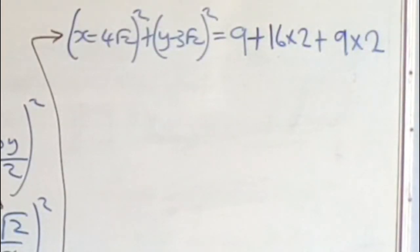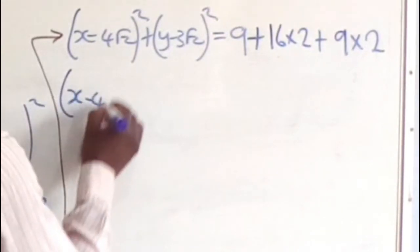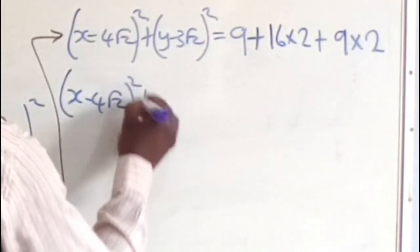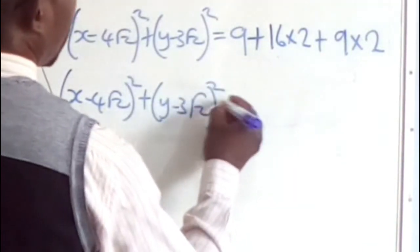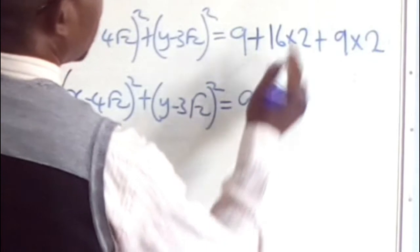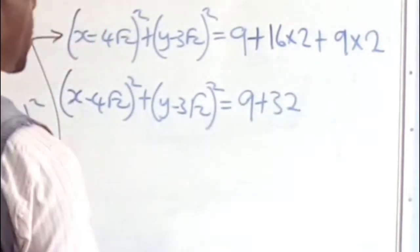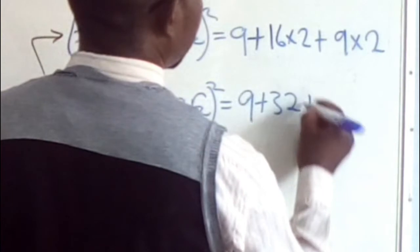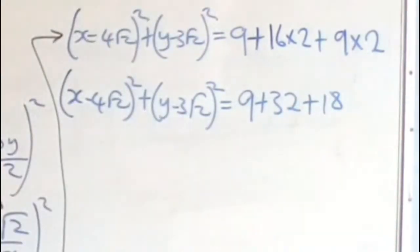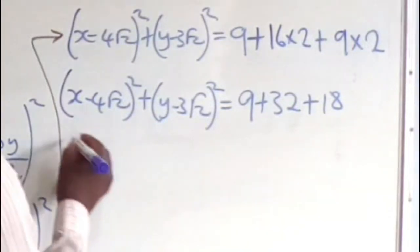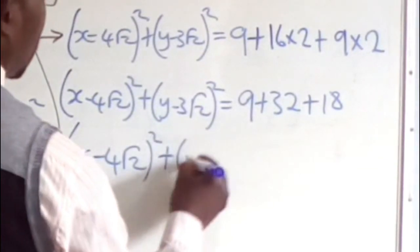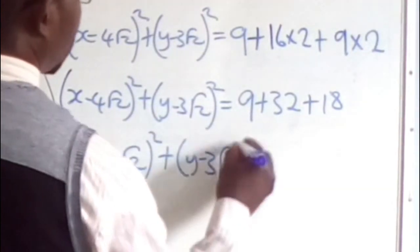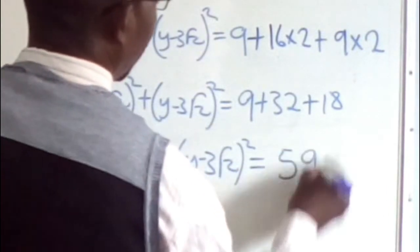At that point we have (x − 4√2)² + (y − 3√2)² = 9 + 32 + 18. We can do the required addition: 9 + 32 + 18 = 59. So (x − 4√2)² + (y − 3√2)² = 59.